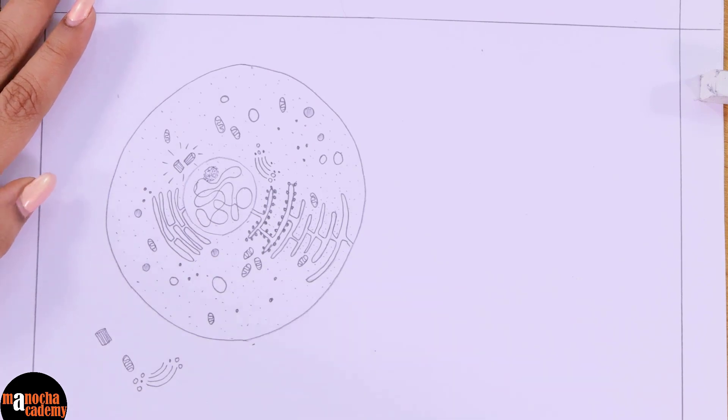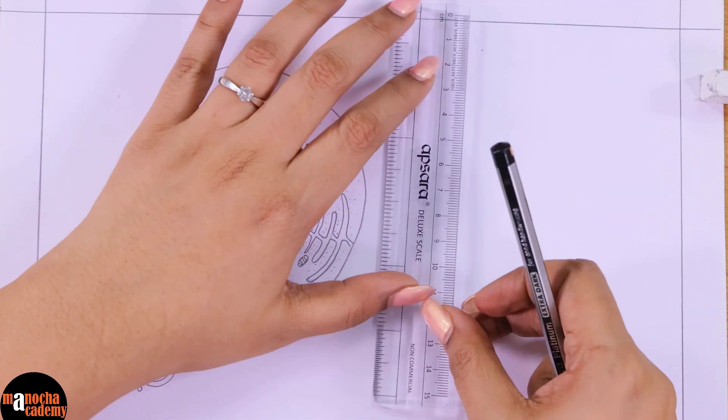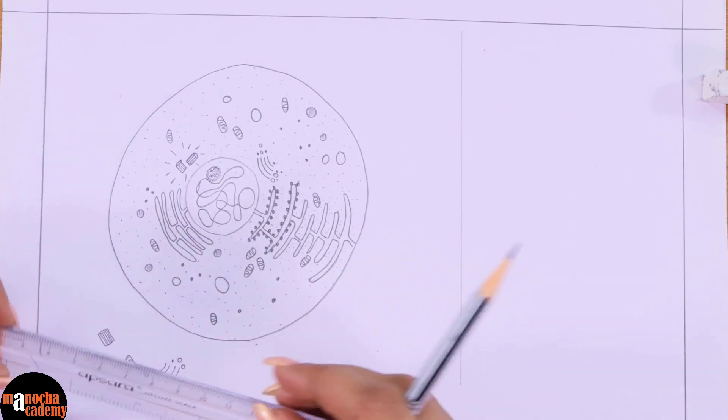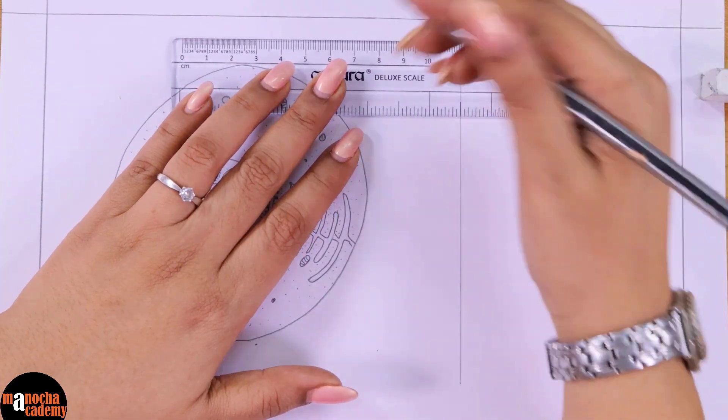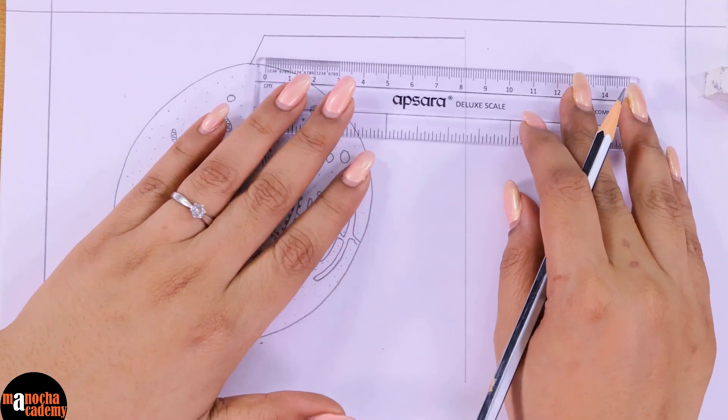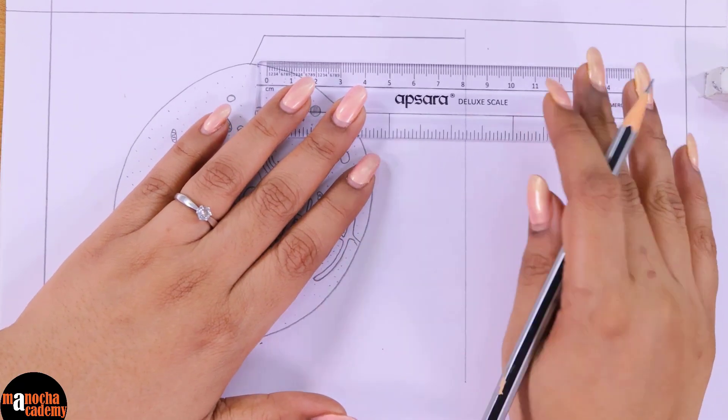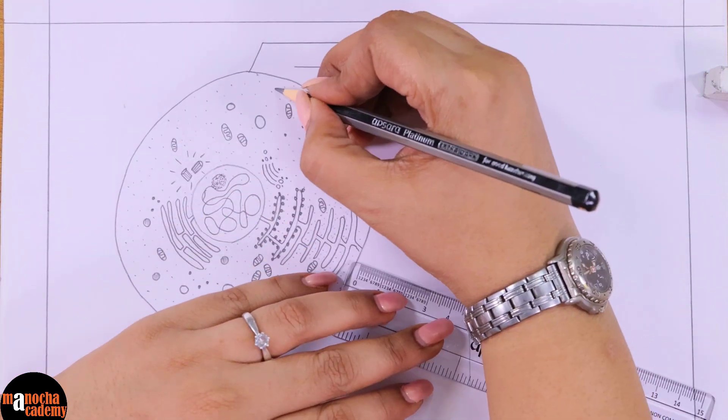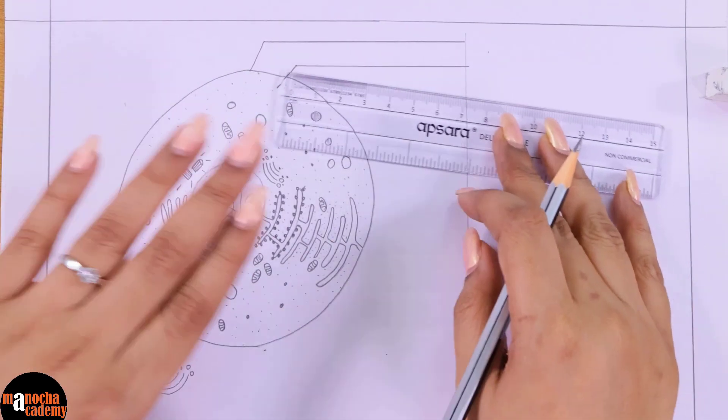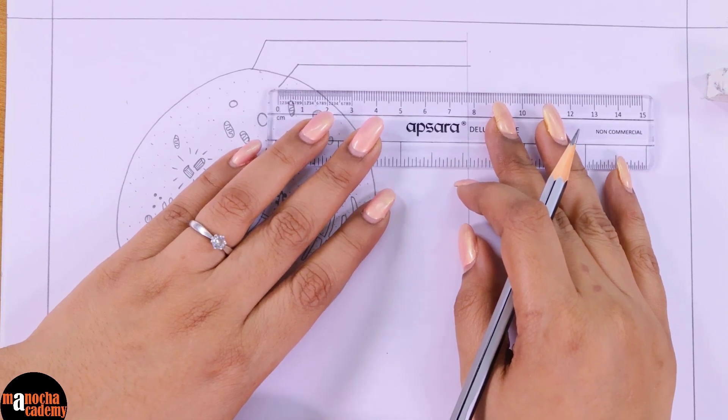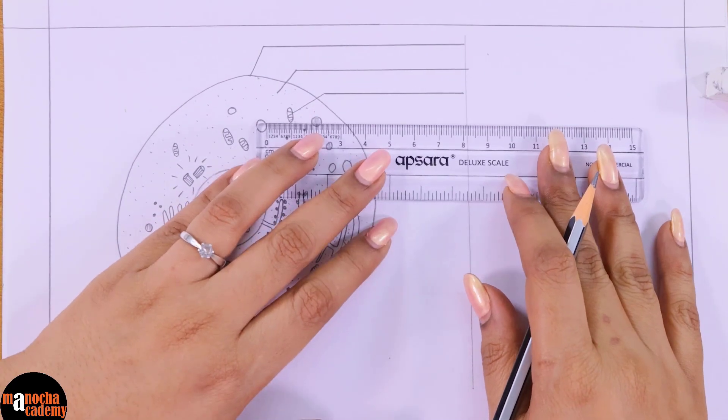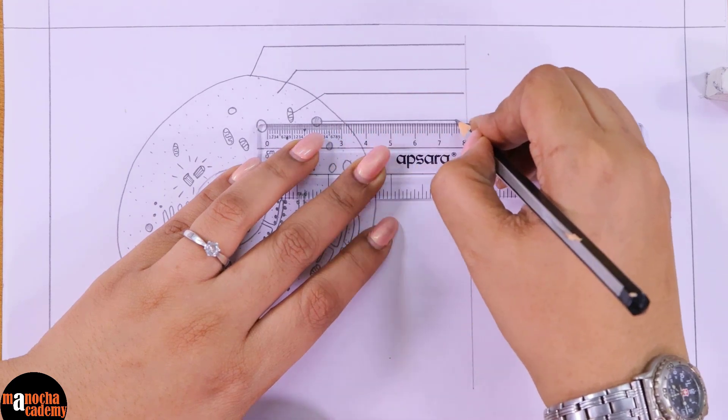Now we will go ahead with the labeling. So there are plenty of things to label here. We will first draw a light line here. We will keep all the labellings on the right hand side. Try to keep everything on the right hand side. And we will draw the lines for the labeling with a ruler. We will try to keep the lines parallel to each other. Try to label everything. If by chance you are asked to label all the parts of an animal cell, then try to label some of the parts above and some of the parts below by drawing lines from here. Otherwise, everything will become very clumsy.